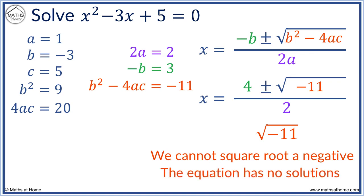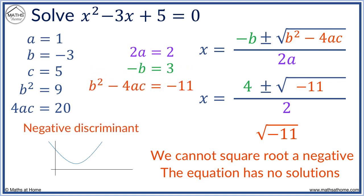There are no values of x that will give x squared minus 3x plus 5 an answer of 0. Here is the graph. It can still be plotted, but it never touches the x-axis. b squared minus 4ac was negative — we couldn't square root it. Negative discriminants mean that there are no solutions. The graph is completely above the x-axis.